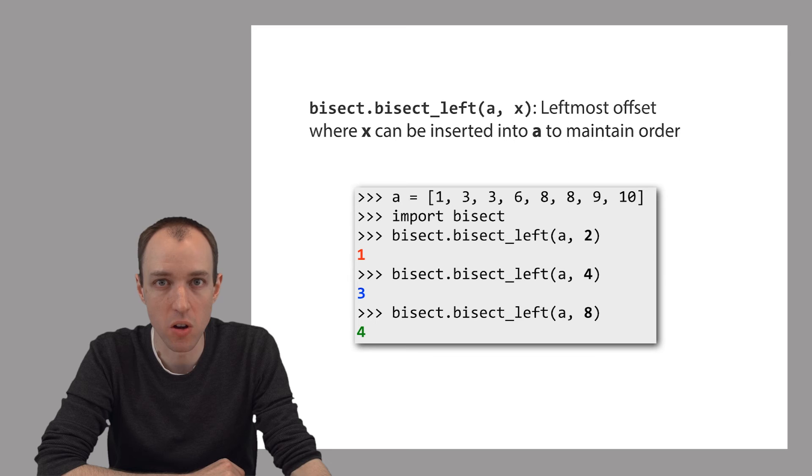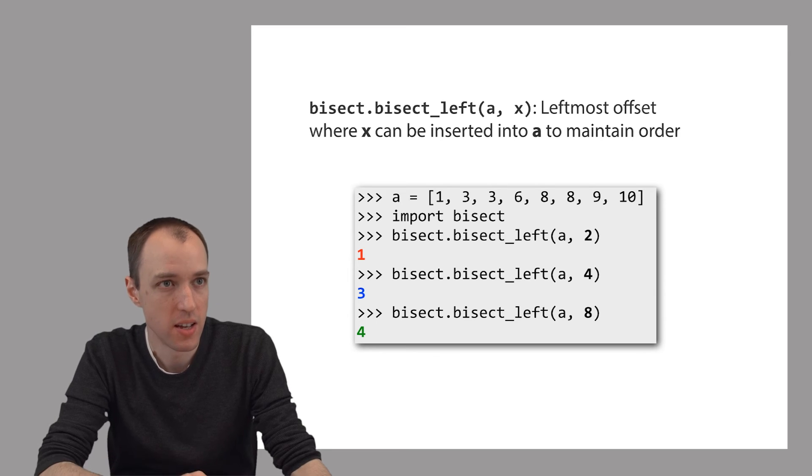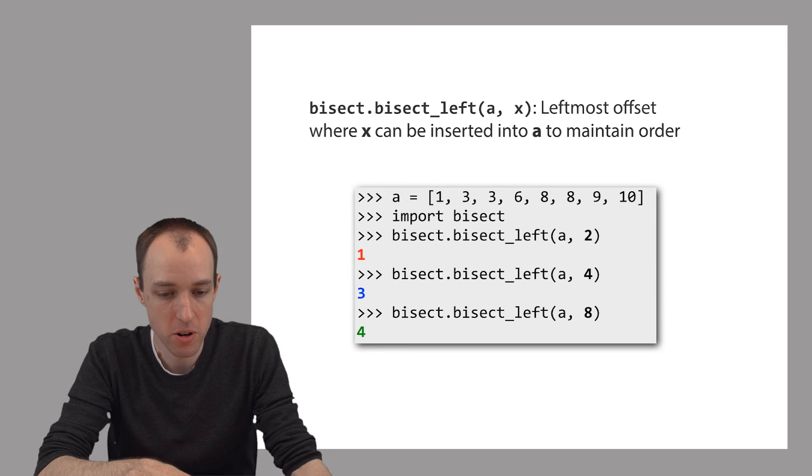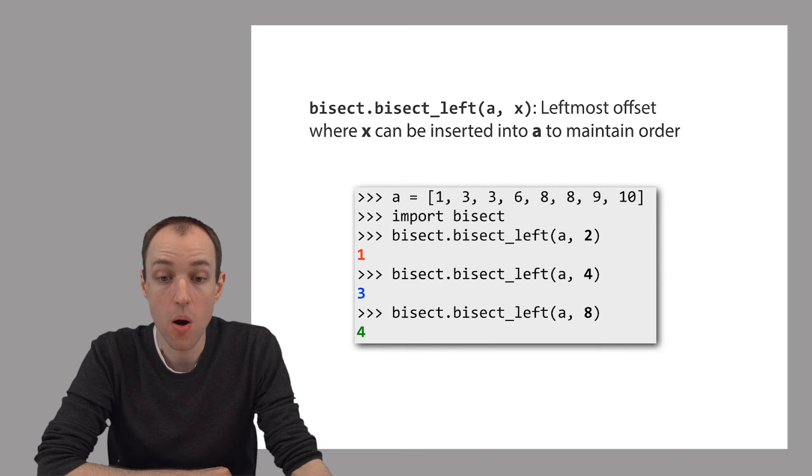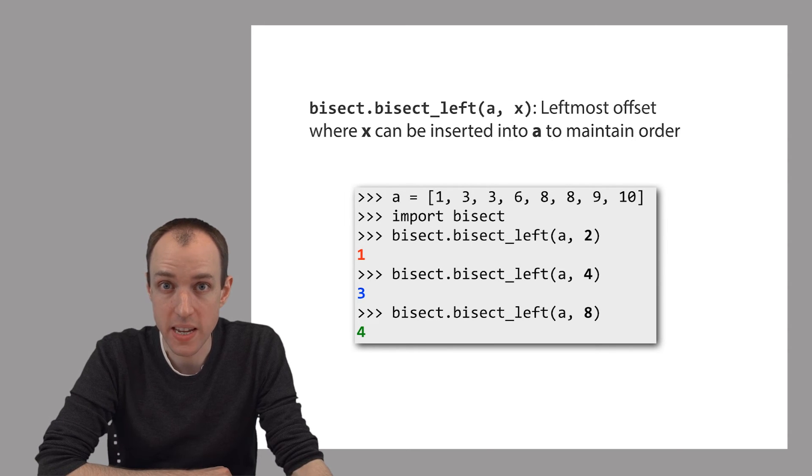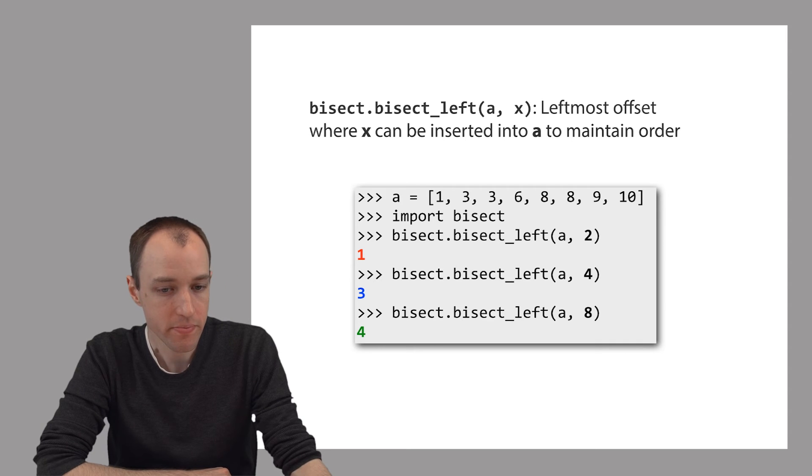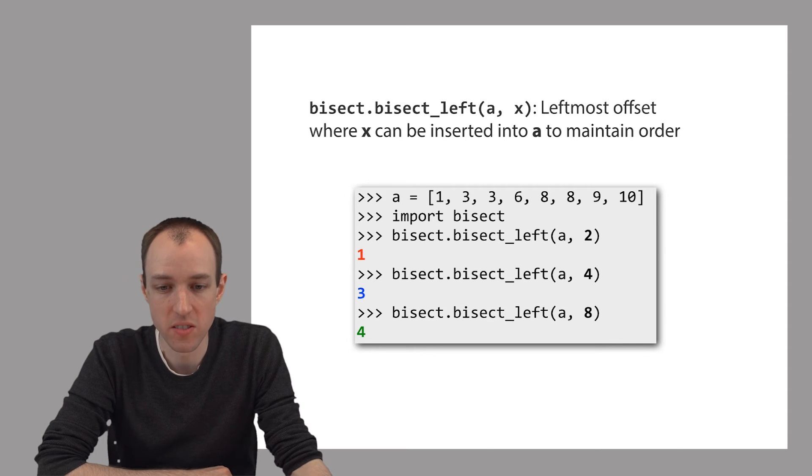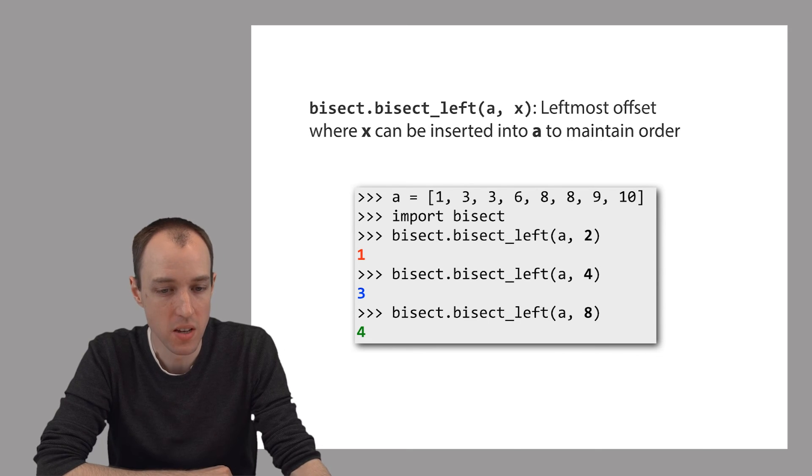So one function in this module is called bisect_left. This function takes two parameters. The first parameter, a, is a list that's already sorted in ascending order. If this is a list of strings, then the strings should be in alphabetical order. Or if this is a list of integers, then they should be in ascending order. And the second parameter, x, is an item.